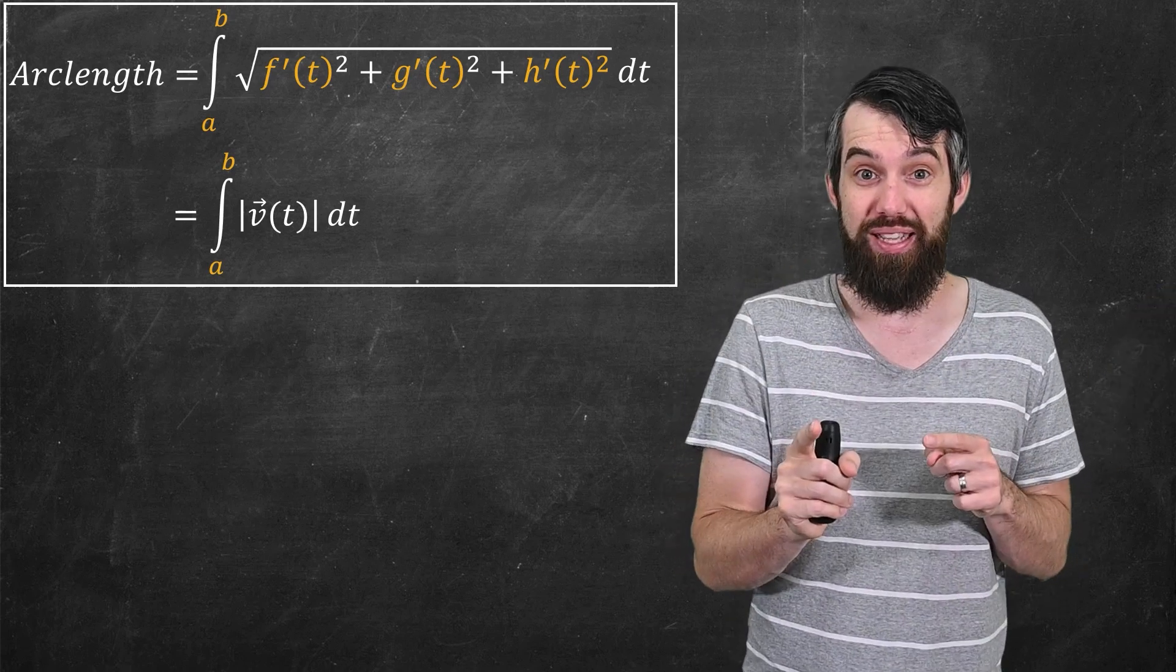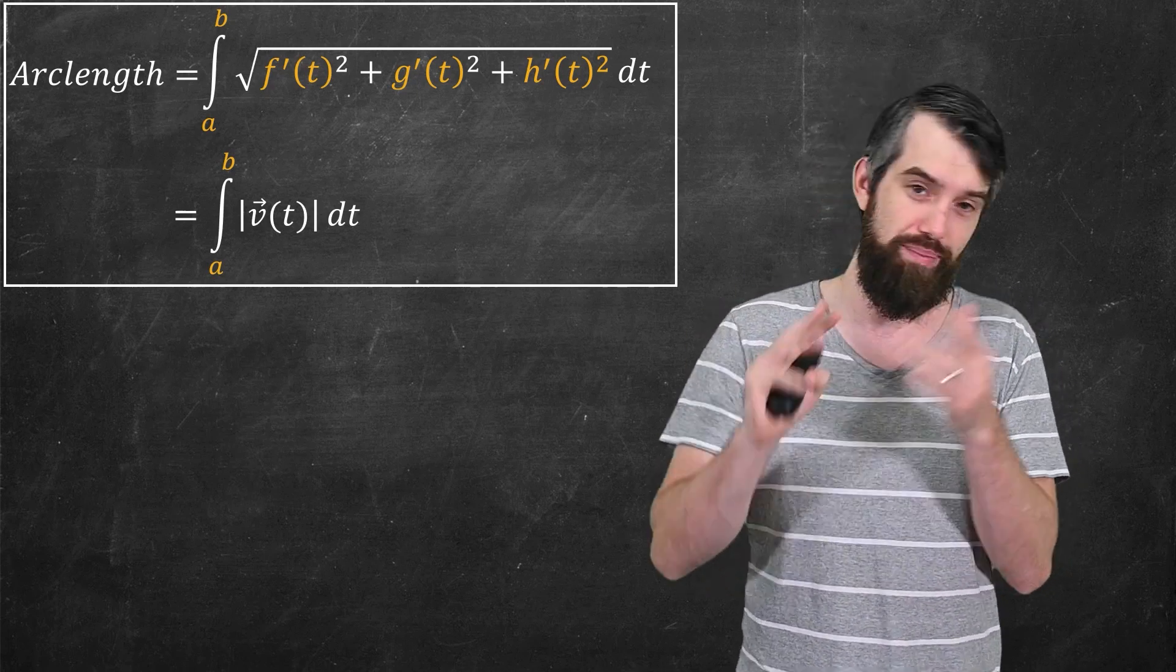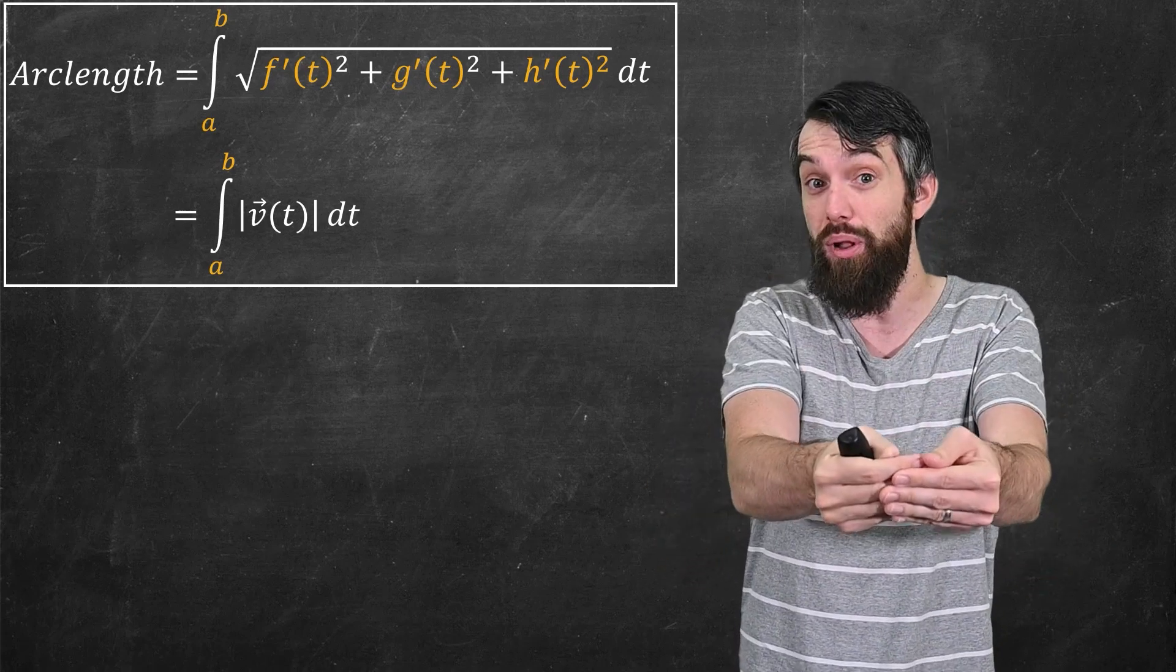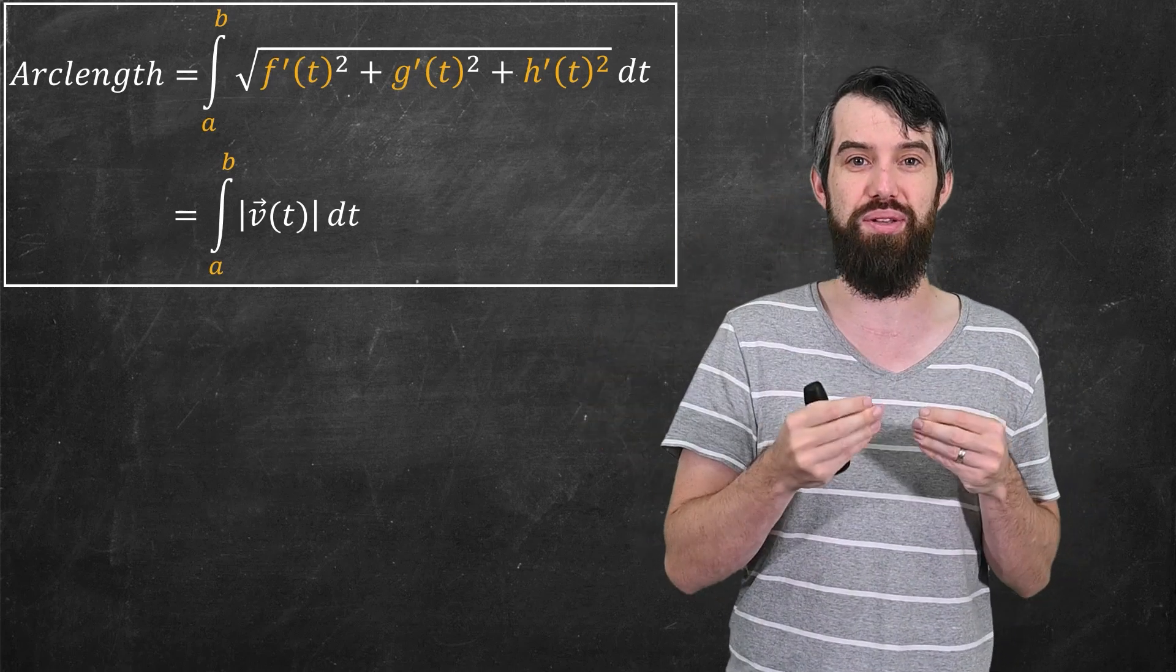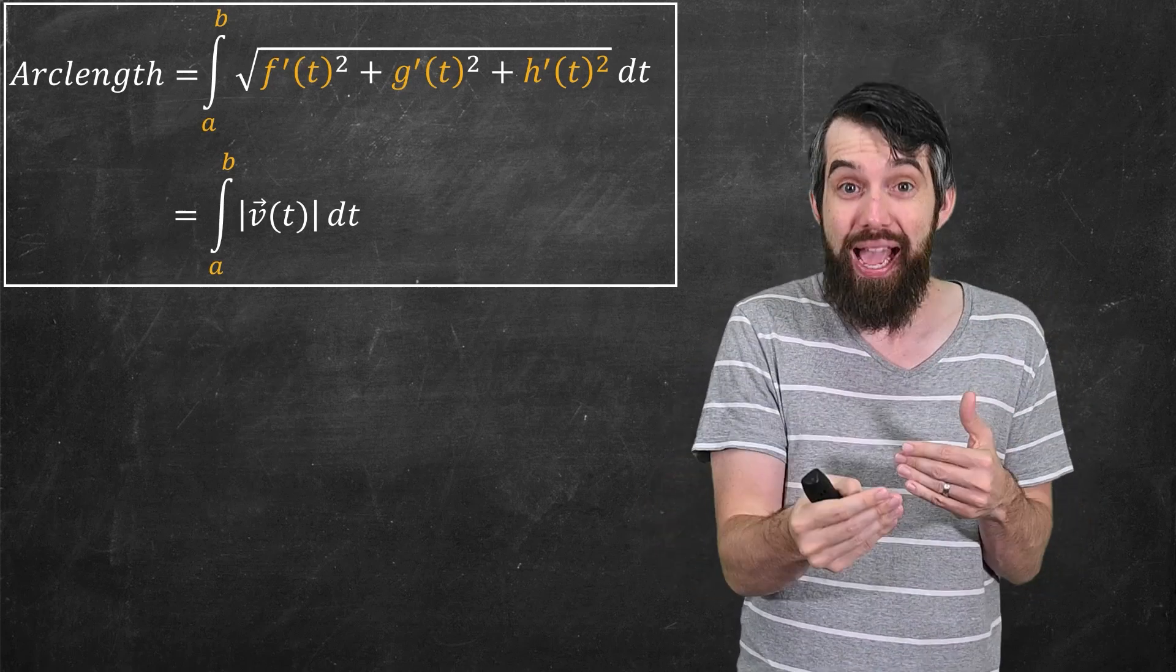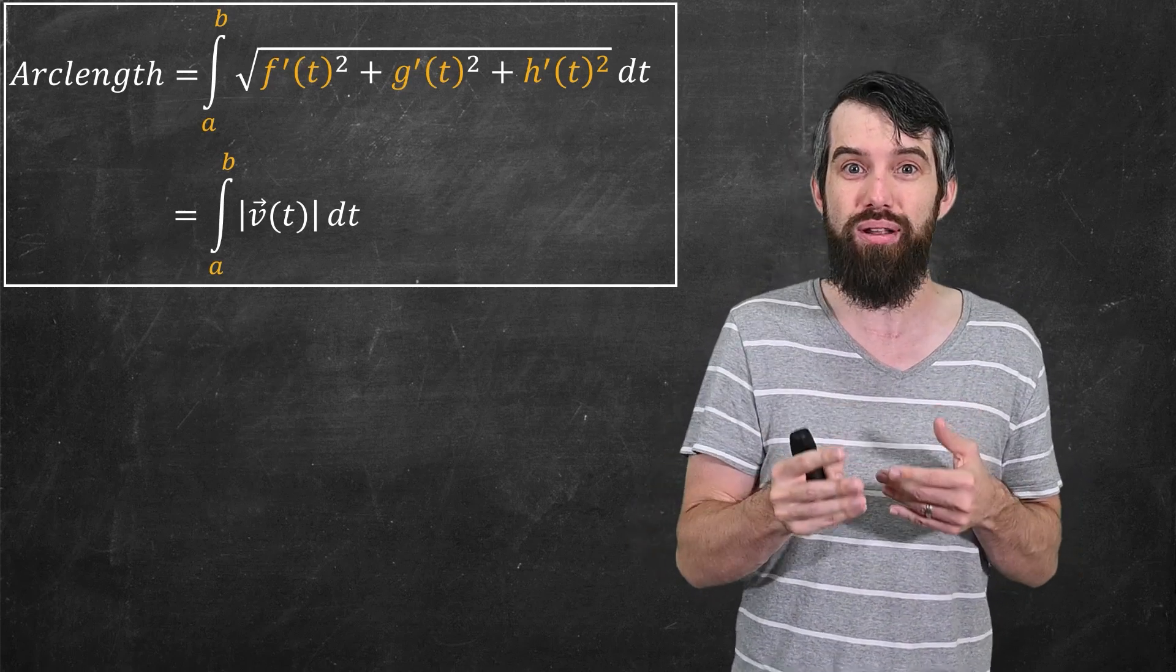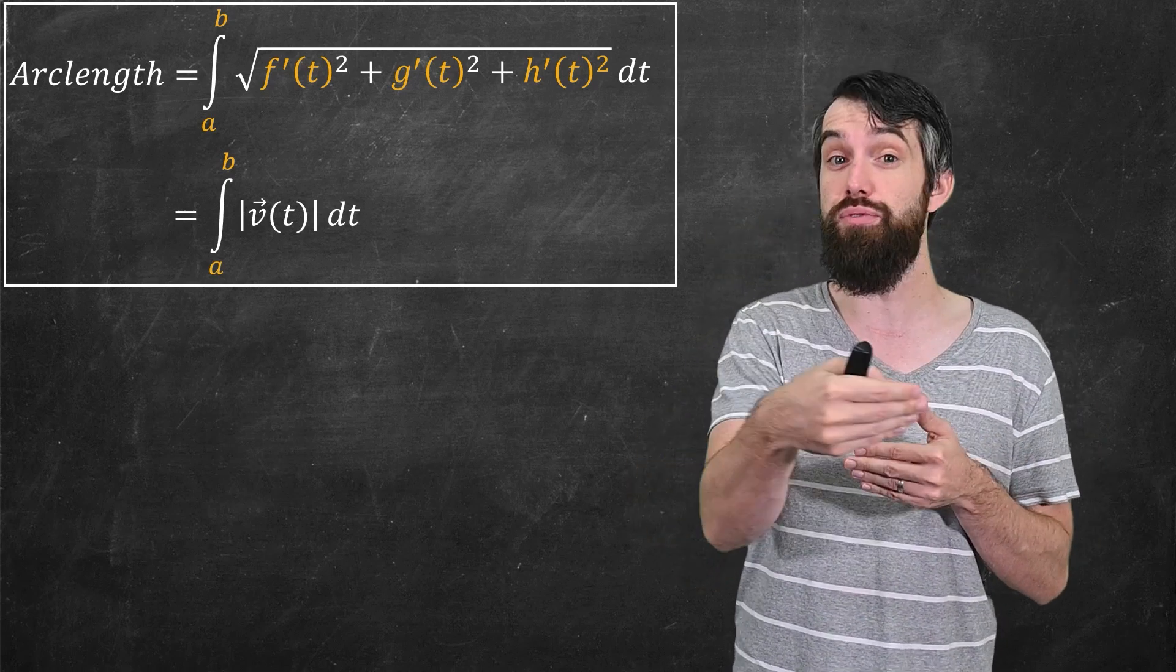Now, what's so wonderful about this is it doesn't matter what parameterizations you choose, but at least we have to have some conditions for how nice our parameterizations are going to be. But assuming we have that, it doesn't matter whether you, for example, drive twice as fast as I drive. This formula is always going to give the same arc length, and that makes it independent of the kind of arbitrary choices that we make, like the specific path which we drive along the curve. Arc length is something intrinsic to the curve, not the specific path that you take along the curve.